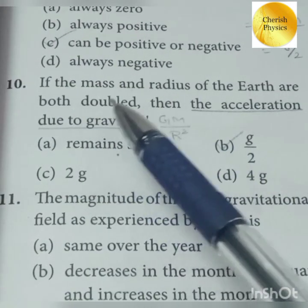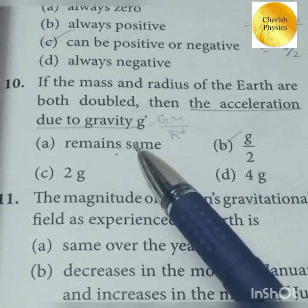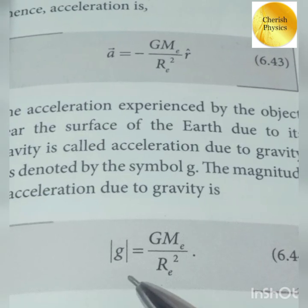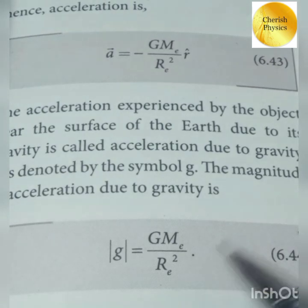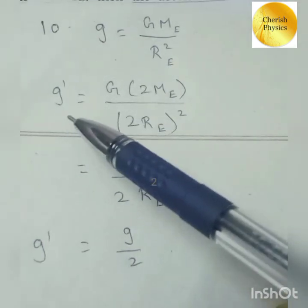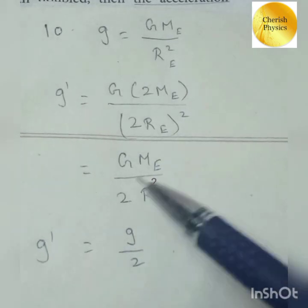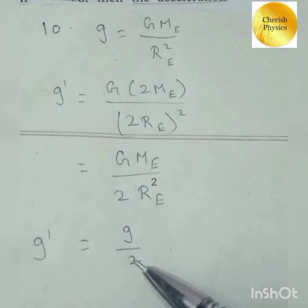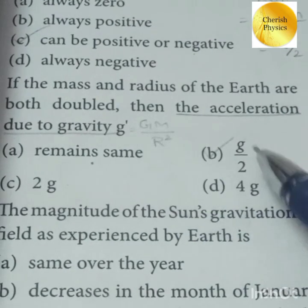Question 10: If the mass and radius of the earth are both doubled, then the acceleration due to gravity g becomes: g' = G × 2M_e / (2R_e)² = G × 2M_e / (4R_e²) = GM_e / (2R_e²) = g/2. So the acceleration due to gravity g' equals g/2.